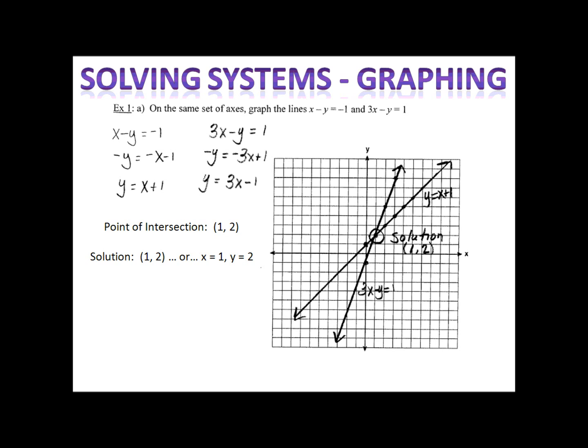With the solution being (1, 2), that means x is one and y is two. If I plug one in for x and two in for y, both equations will be true. For x minus y equals negative one: I put one in for x and two in for y, and I get negative one equals negative one — that's clearly true. In the second equation, 3x minus y equals one: I put one in for x and two in for y, and I end up with three minus two — one equals one — that's clearly true. X equals one and y equals two are the only numbers that will cause both equations to be correct at the same exact time. You can check your solution by substituting the values you find into the original equations to see if they work.